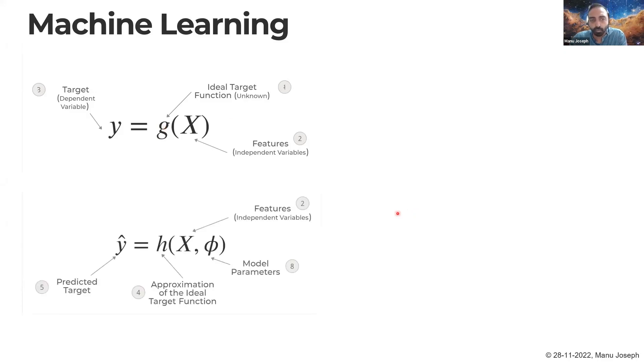Machine learning says that I have this framework. I can take an array of features along with a few model parameters, and I have a function h which can predict a target y-hat. Now that we have this, what we really want to do is that we want to make this h function as close to the g function as possible. We want to approximate that g as close as possible, and for that we use something called a dataset.